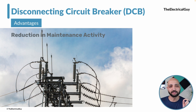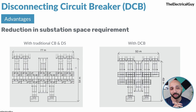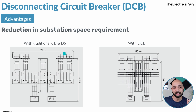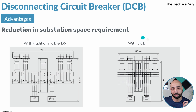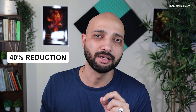The second advantage is reduction in substation space requirement. On the left-hand side you can see a traditional substation where dedicated circuit breakers and disconnectors are used, with a total length of around 77 meters. If we replace those with a disconnecting circuit breaker, the area is reduced to 50 meters — almost a 40 percent reduction in space. That is a very significant advantage.